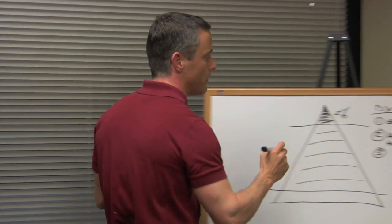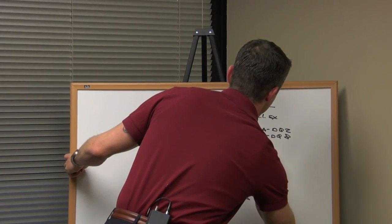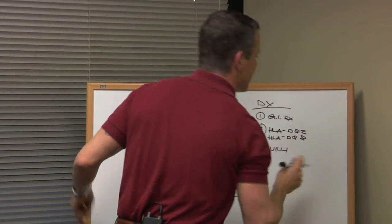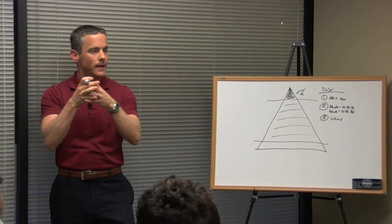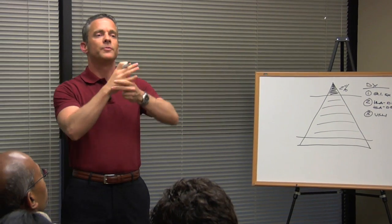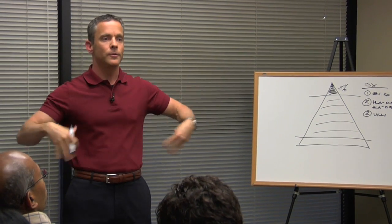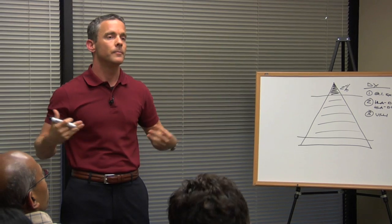You need a biopsy of your villi, which are these little hairs in your small intestine that increase your absorption. They increase the surface area of your intestine so that you can absorb your food.